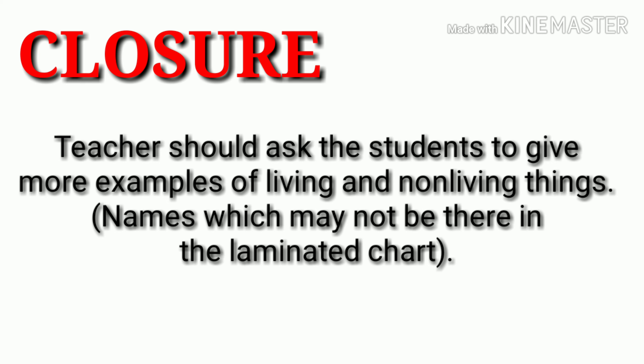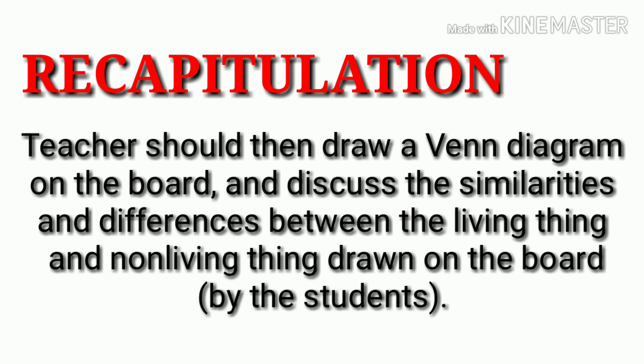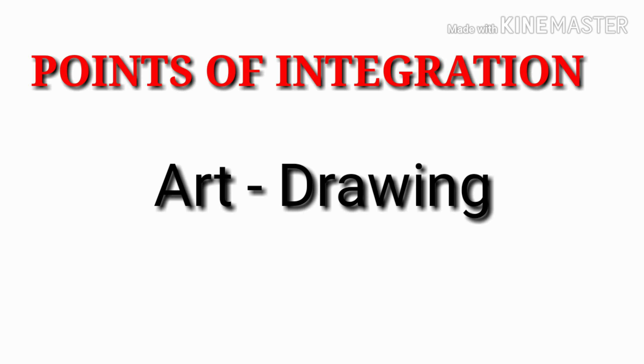For the closure, the teacher should ask students to give more examples of living and non-living things — names not on the laminated chart should also be accepted. For recapitulation, the teacher should ask one student to draw a living thing and another to draw a non-living thing on the blackboard. The teacher should then draw a Venn diagram and discuss similarities and differences between the two.